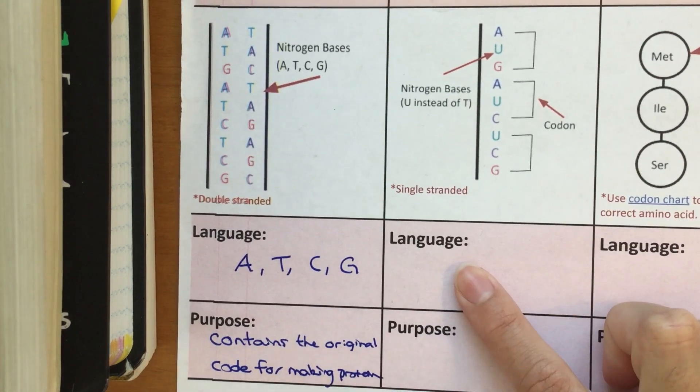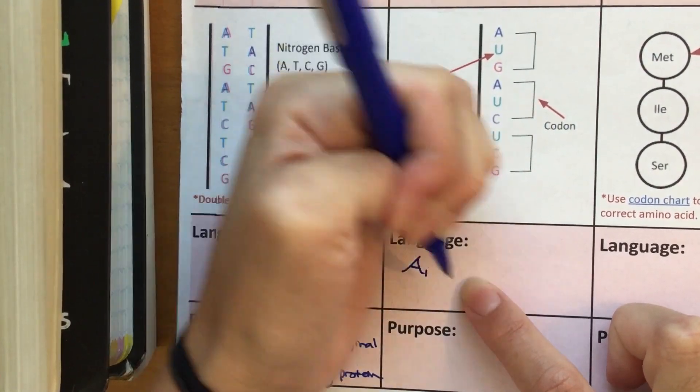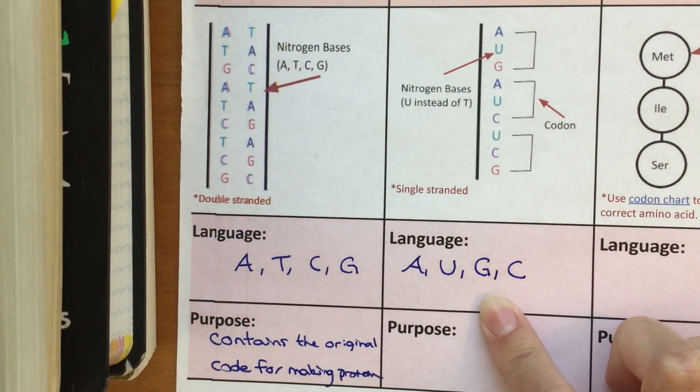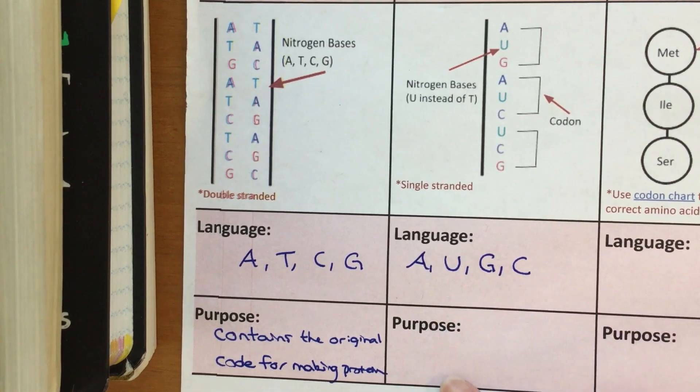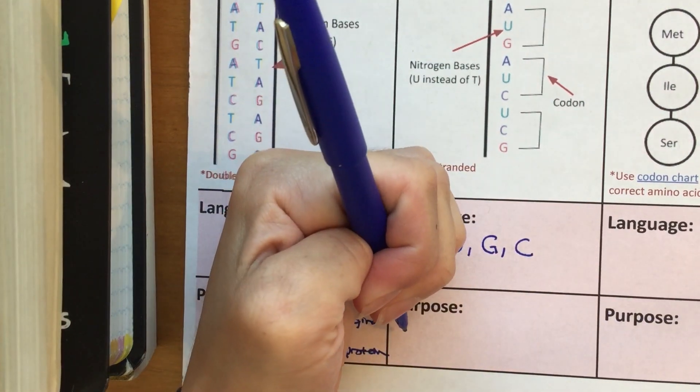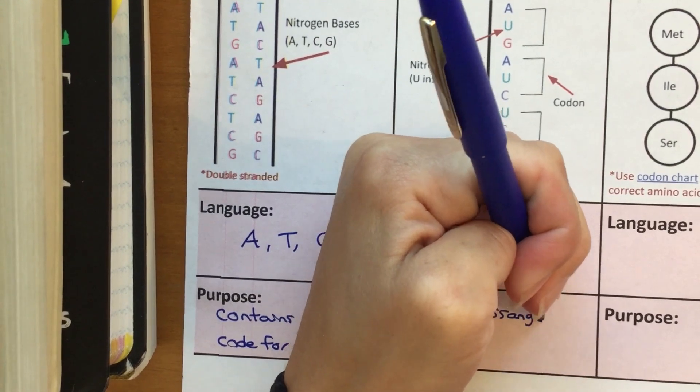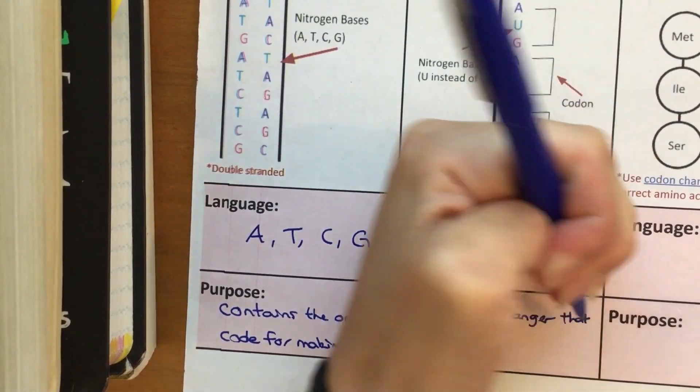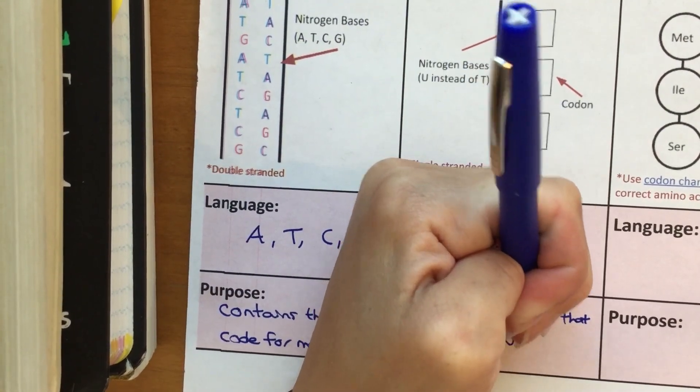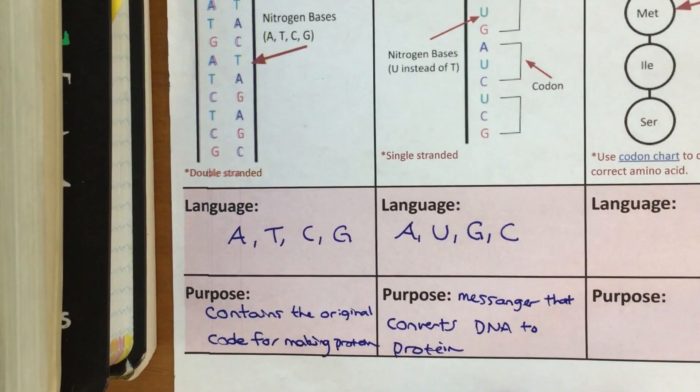So let's fill in what we know about RNA. The language is going to be similar to DNA, but instead of the T, you're going to substitute a U. So everything else remains the same. And the purpose is that it's a middleman, sort of like the messenger that converts DNA to protein. So we can put messenger that converts DNA to protein.